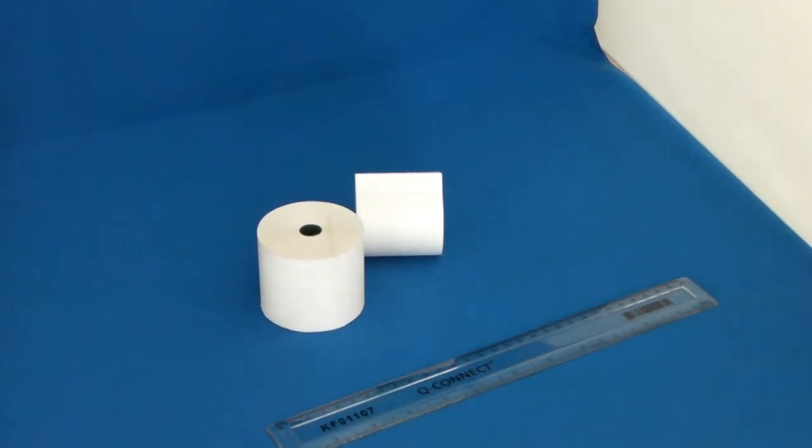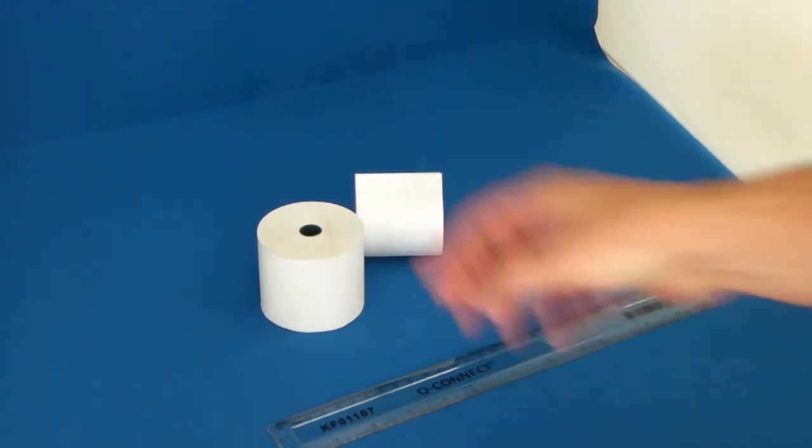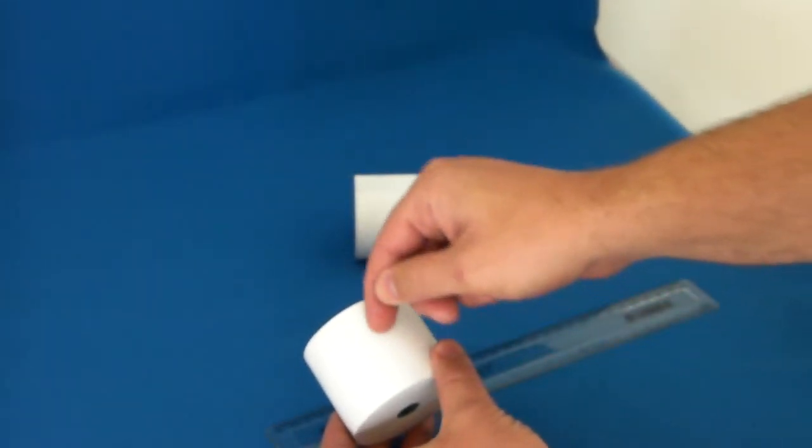Firstly, you need to ascertain which type of roll you require. To do this, simply take the current roll you have and rub your finger across it.